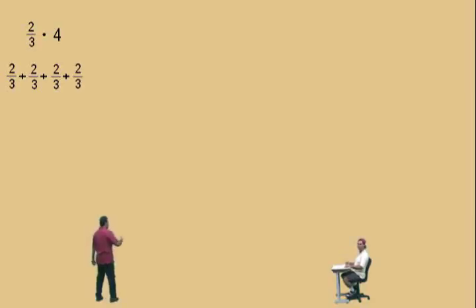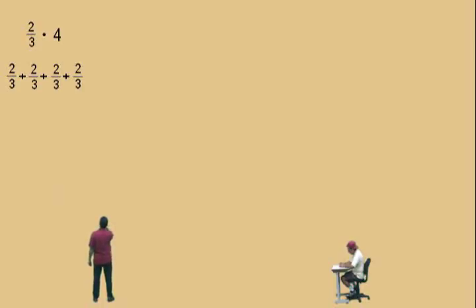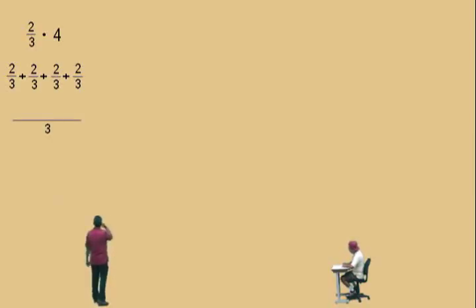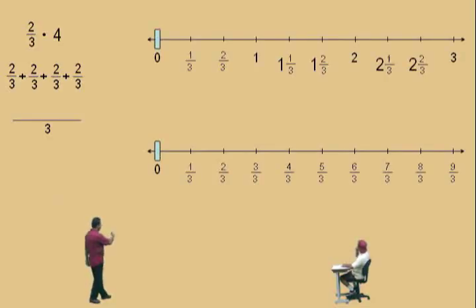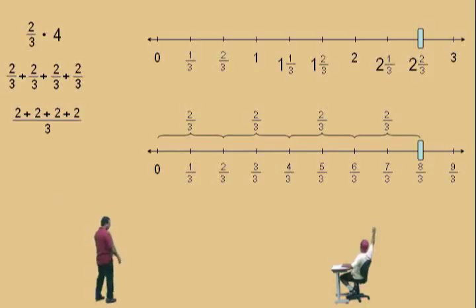2 thirds plus 2 thirds plus 2 thirds plus 2 thirds. That's right. Now notice, all the denominators are the same. Remember, whenever you're adding or subtracting fractions, you must have all the denominators the same. So how do we add these fractions together? Put a fraction bar with a 3 on the bottom, and now we're supposed to add numerators. Let's bring out our number line and do it on the number line. We're going to take 2 thirds plus 2 thirds plus 2 thirds plus 2 thirds. And what do we get, Charlie? 8 thirds. And there's the arithmetic right there.